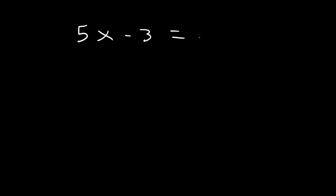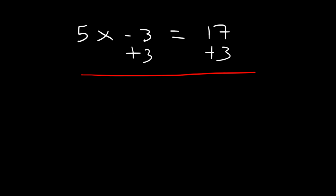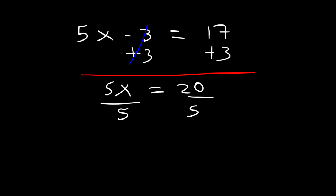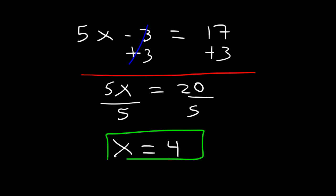This is going to be the last example for this video. Go ahead and solve the equation. We need to add 3 to both sides. 17 plus 3 is 20, so 5x is equal to 20. Next, divide both sides by 5. 20 divided by 5 is 4. And so that's going to be the solution to this equation.